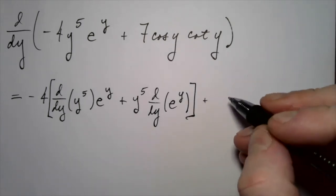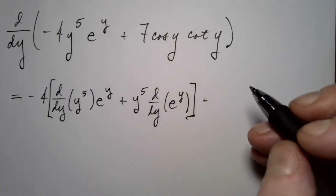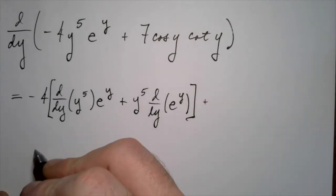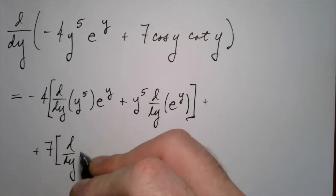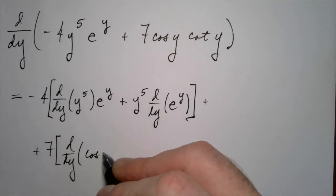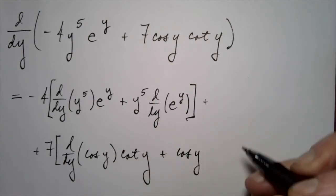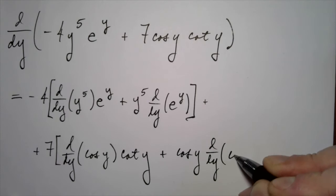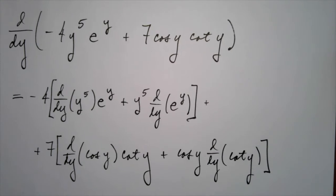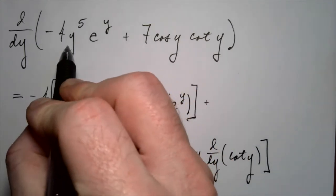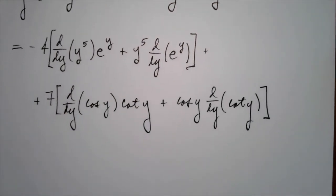Next up, we have seven times the derivative of cosine times cotangent. I'll tell you what, I actually want to put this down on the next line to make sure I have room. We have the derivative of the first piece, that's cosine of y times the second piece, that's cotangent of y plus the first piece, that's cosine times the derivative of cotangent. So we just applied the product rule twice to this product and to this product.